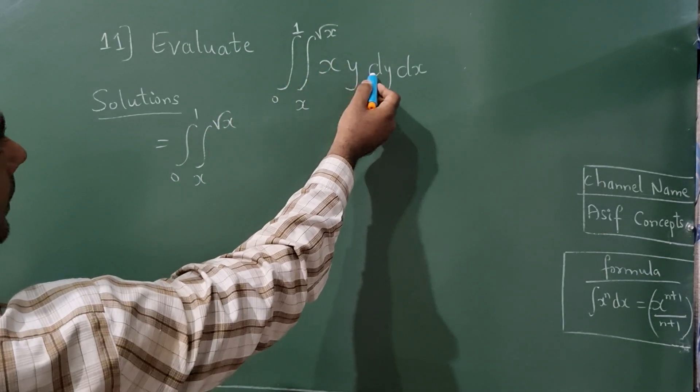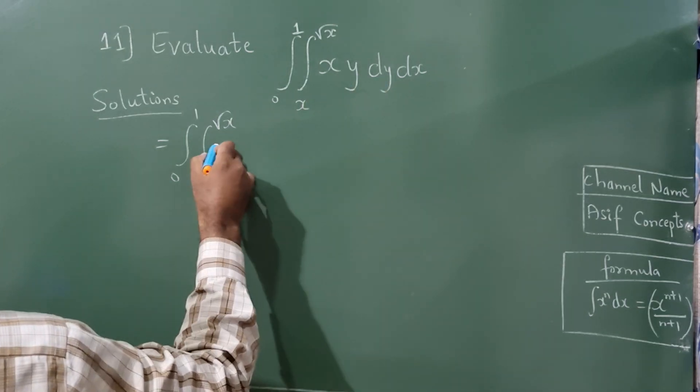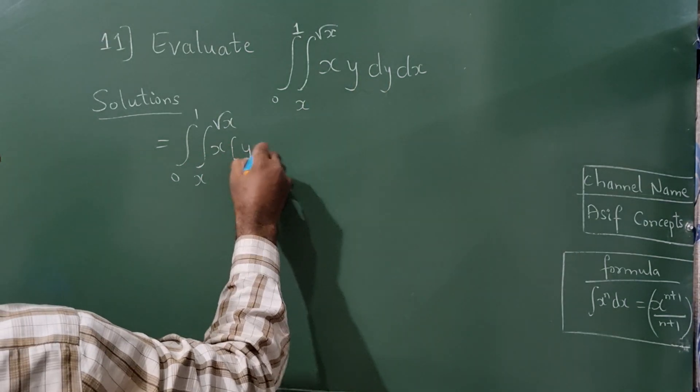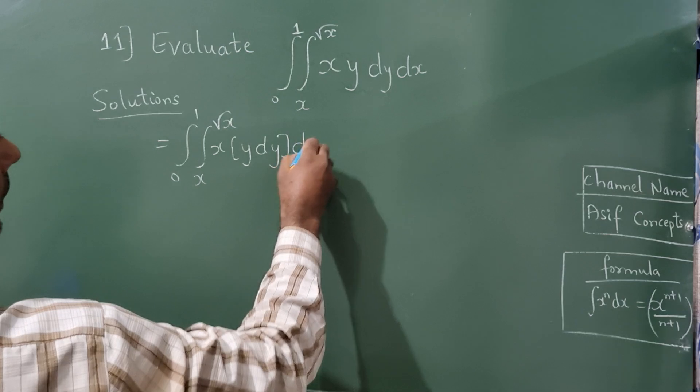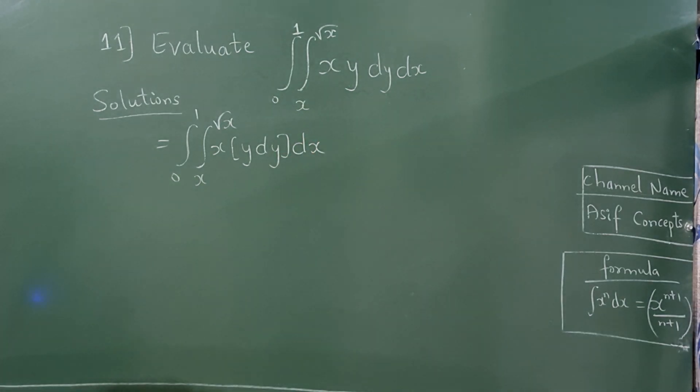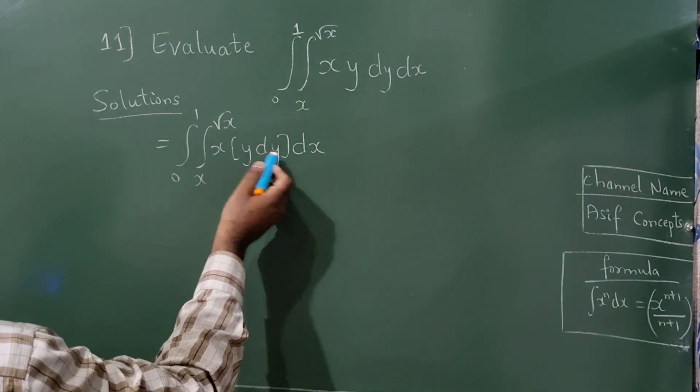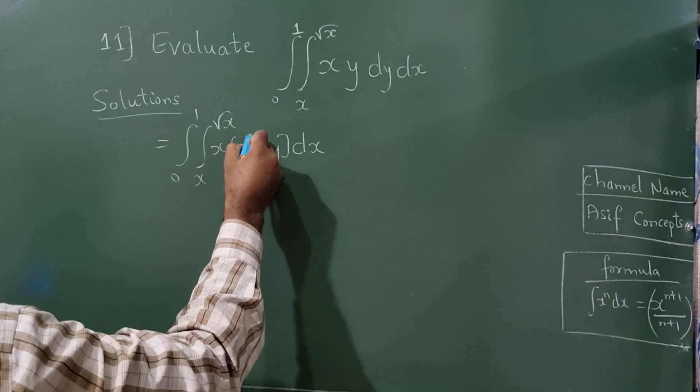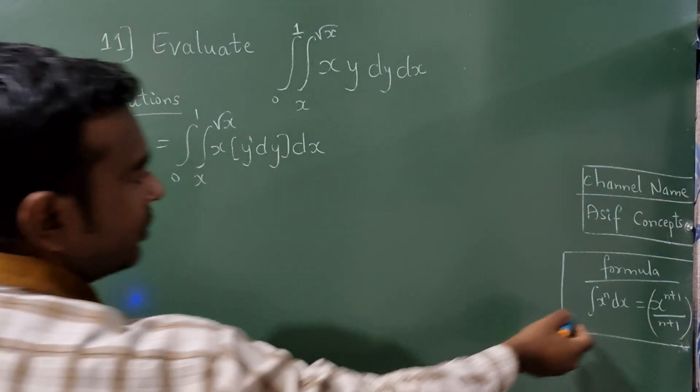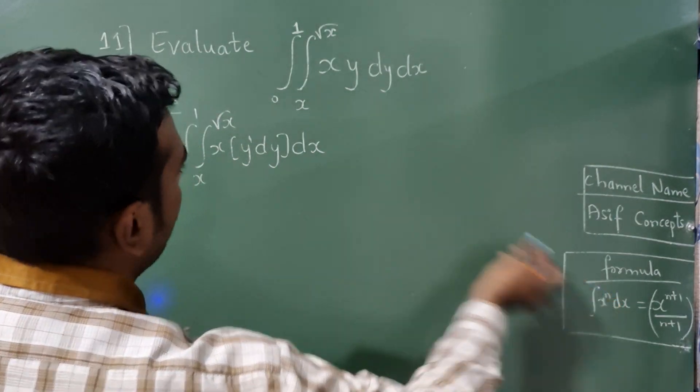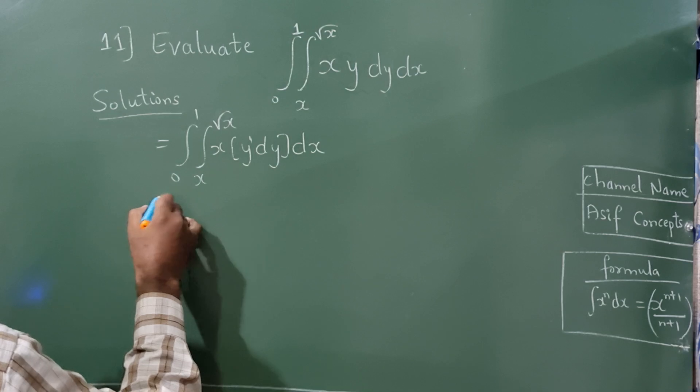Since I am integrating with respect to y, so x y dy into dx. Now first time I am integrating with respect to dy, so this will become y raised to 1. Using this formula, n value is 1, so integration of y will become y square by 2.